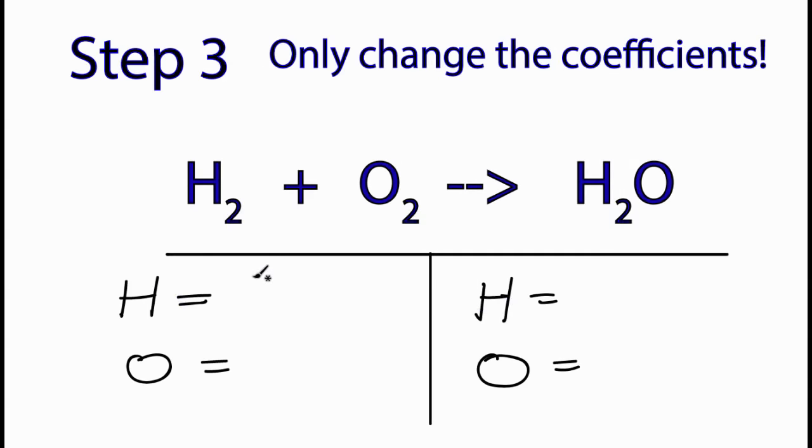So in this equation, we have two hydrogens, two oxygens, over here two hydrogens, and one oxygen. Let's see, I'll put a two right here. So two times two, that gives me four hydrogens, but two times the one, that'll give me two oxygens. So my oxygens are balanced now, but my hydrogens are messed up.